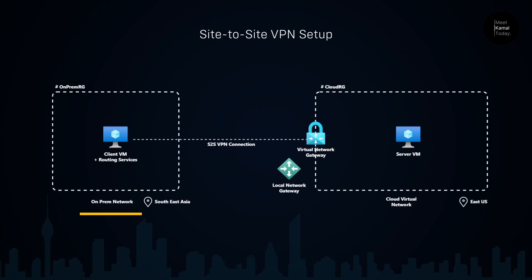First, we're going to create our on-premise setup. This is going to be another virtual network on Azure and I'm going to deploy this to a separate region from my cloud region. Basically, this is a simulation of my on-premise network and the cloud network. I'm going to deploy this to East US region and then I'm going to host a virtual machine that will host a sample website. Then I'm going to install a virtual network gateway and that will establish the connection between the cloud network and the on-premise network's gateway.